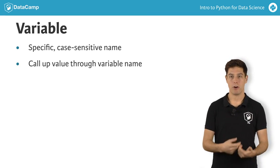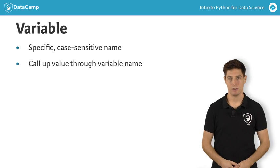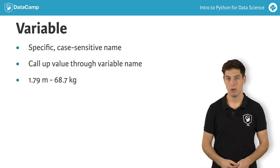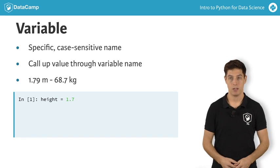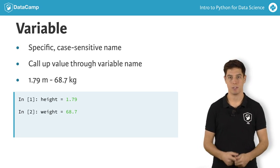Suppose you measure your height and weight in metric units. You're 1.79 meters tall and weigh 68.7 kilograms. You can assign these values to two variables named height and weight with an equal sign.